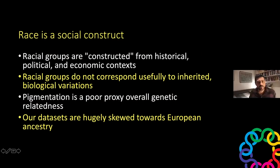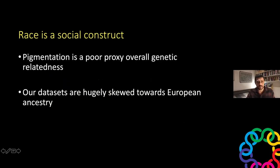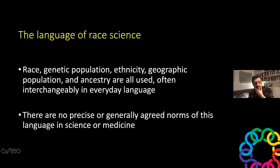Race as a social construct doesn't correspond usefully to biological variation. A crucial point is that our data sets are hugely skewed toward European ancestry. This is understandable given the history of science and the structural biases that occur within science as part of society, but we need to be aware of these facts — particularly the bias in our data sets.